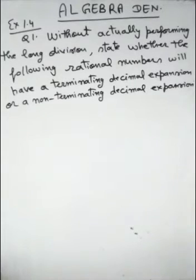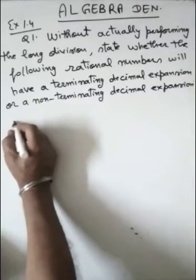Now the question is, without actually performing the long division, state whether the following rational numbers will have a terminating decimal expansion or a non-terminating decimal expansion.